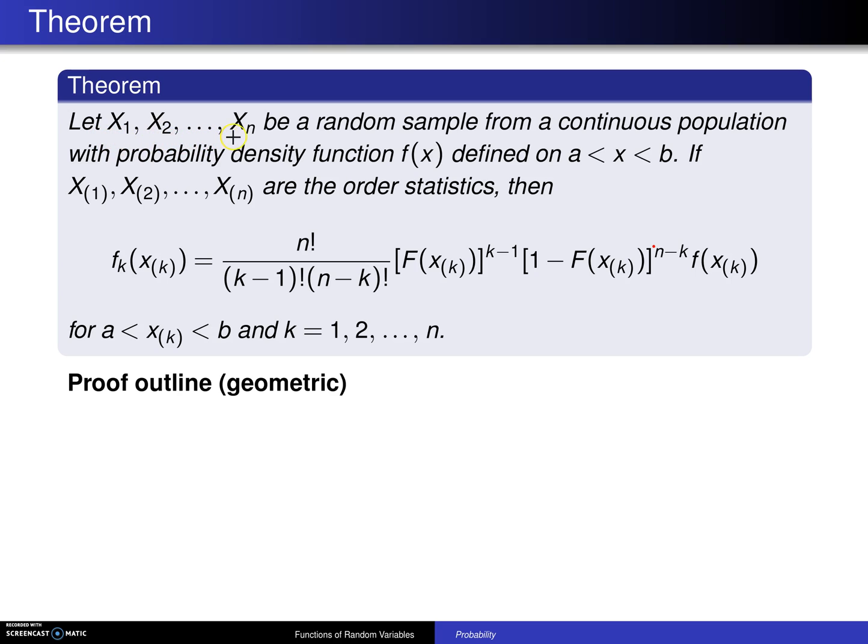Let x1, x2, up to xn be a random sample from a continuous population with probability density function f defined on the support a is less than x is less than b.